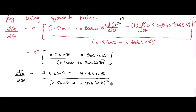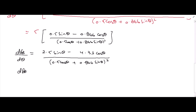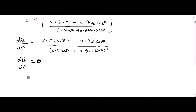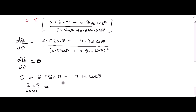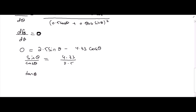Since we are finding the minimum, the gradient at the minimum is zero. So I set dFp over d-theta equal to zero. Multiplying both sides by the denominator gives zero, so we have: 2.5 sin theta minus 4.33 cos theta equals zero. Rearranging, sin theta over cos theta equals 4.33 over 2.5, which means tan theta equals 4.33 over 2.5, giving theta equal to 60 degrees. This is our first answer.